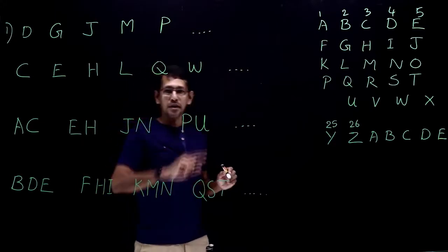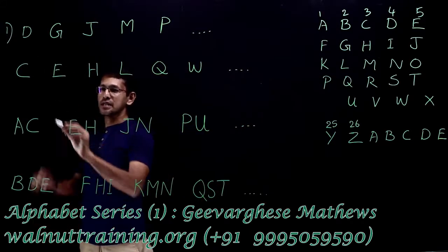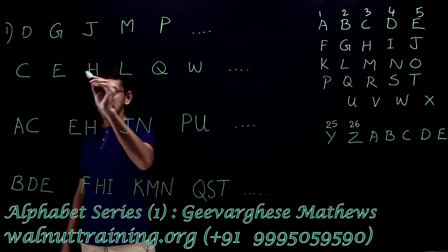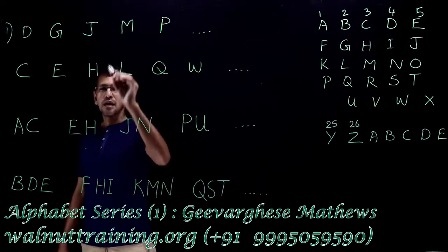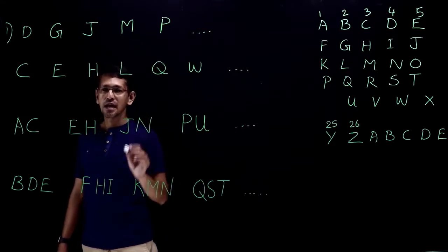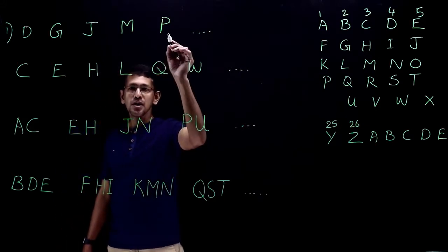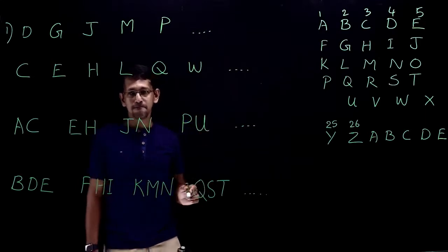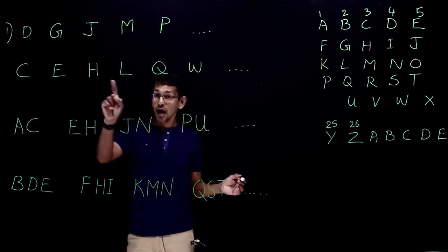D, after D comes E and F, two letters missing. After G comes H and I, two letters missing, then J. After J comes K, L, two letters missing, then M. After that, two letters missing, then P. After P, Q and R, two letters missing, then S. So naturally the answer is S.